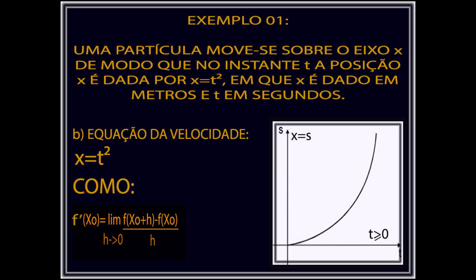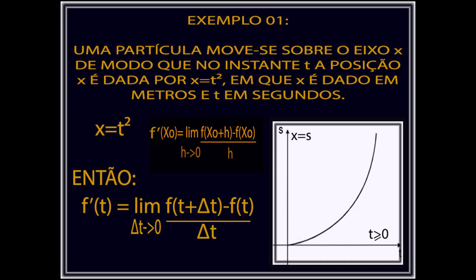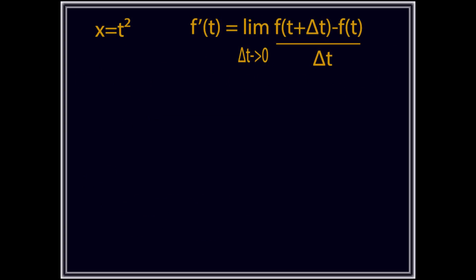a derivada da função de x igual a t ao quadrado é dada por f' de t igual ao limite de delta t tendendo a zero, onde a função de t mais delta t menos a função de t, dividido por delta t.